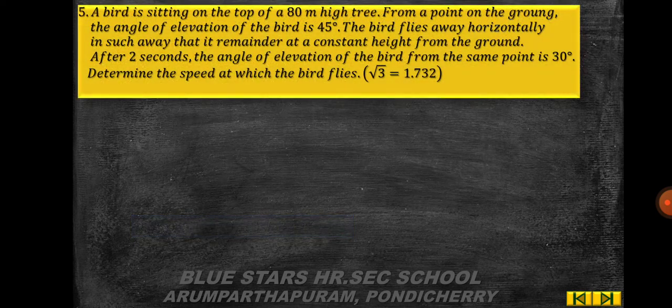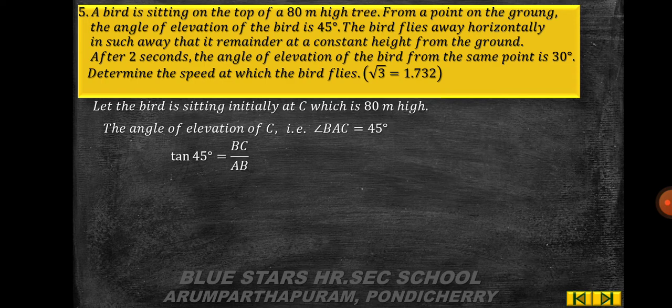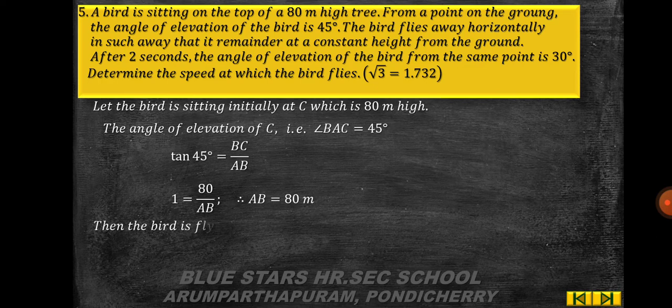Problem 5: a bird is sitting on top of an 80-meter high tree. From a point on the ground, the angle of elevation of the bird is 45°. The bird flies away horizontally at a constant height. After 2 seconds the angle of elevation from the same point is 30°. Determine the speed of the bird. (√3 = 1.732.) Let the bird initially be at C, height 80 m. Since tan 45° = BC/AB = 1, AB = 80 m.